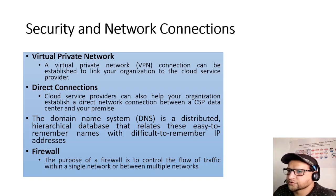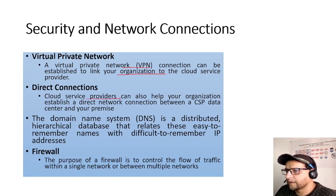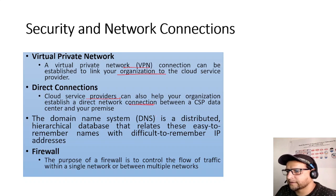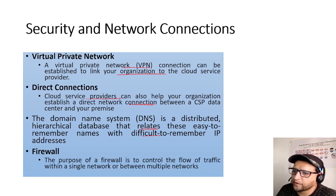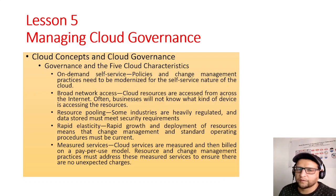Security and network connections: A VPN connection can be established to link your organization to a cloud service provider, or you can set up a direct connection. CSPs can also establish a direct network connection between a CSP and your on-prem infrastructure. DNS is a distributed hierarchical database relating easy-to-remember names to difficult-to-remember IP addresses. A firewall controls the flow of traffic within a network — the same concepts apply to the cloud.